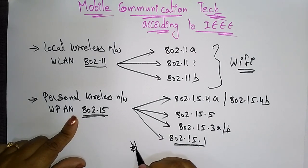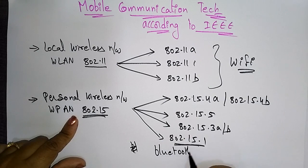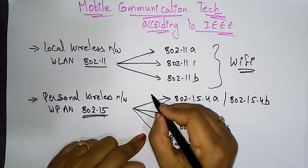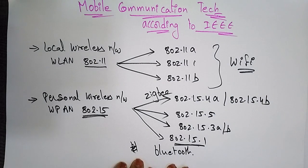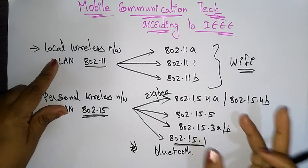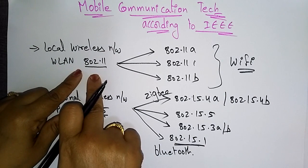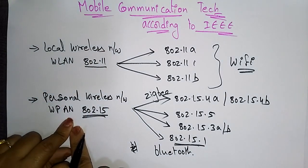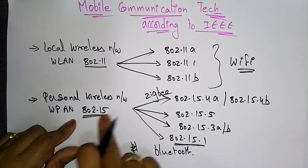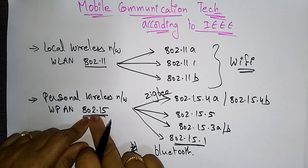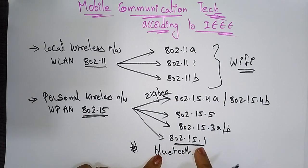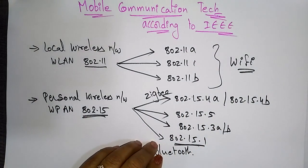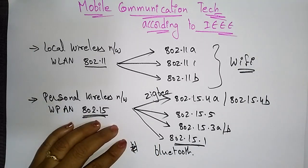802.15.1 is mainly used for Bluetooth technology, whereas 802.15.4 is used for Zigbee technology. So to remember: for wireless local area network using Wi-Fi, the standard is 802.11, and for wireless personal area network, 802.15 is the standard. If you are choosing Zigbee, 802.15.4a or 4b is selected, and 802.15.1 is used for Bluetooth communications.